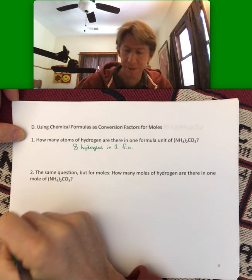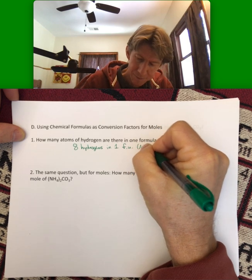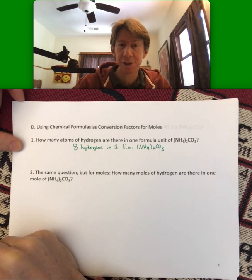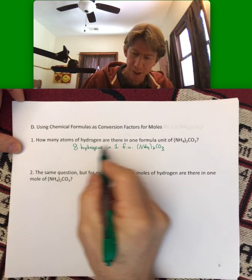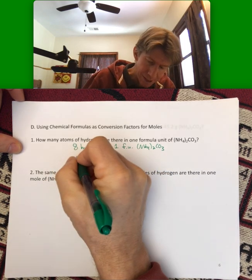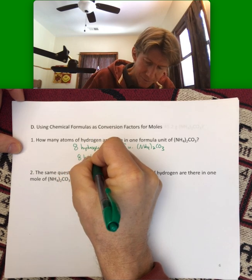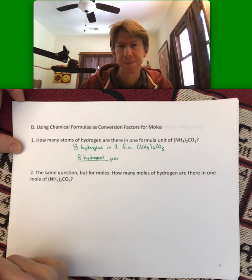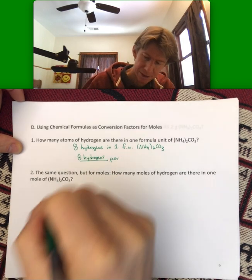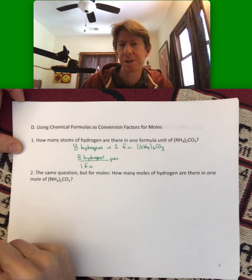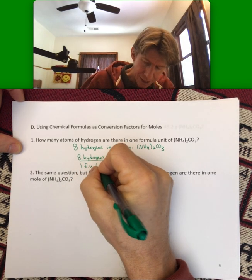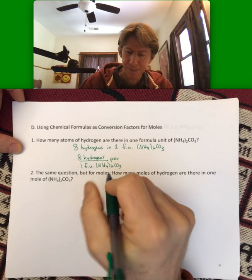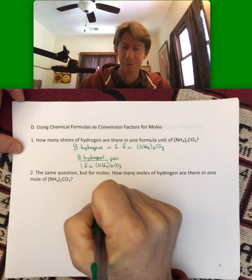Eight hydrogens in one formula unit of ammonium carbonate. And we've used this as a unit conversion before, where you can put one above the other, eight hydrogens, and we've said per one, and now I think we use formula unit though, (NH4)2CO3. I think we did ammonium sulfate before, so similar problem.